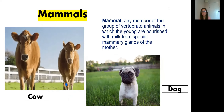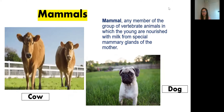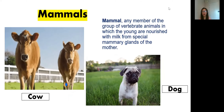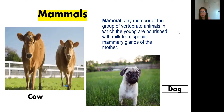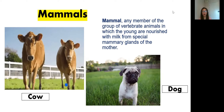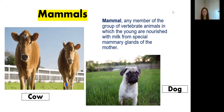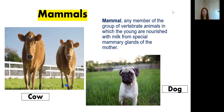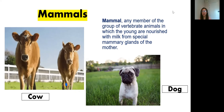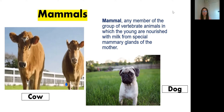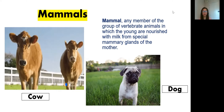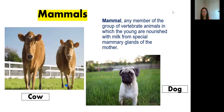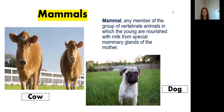Next is mammals. Please say the word: mammals. So a mammal is any member of the group of vertebrate animals in which the young are nourished with milk from the mammary glands of the mother. Mammals have mammary glands. The examples of mammals are cow — look at the picture — and the second one is dog.